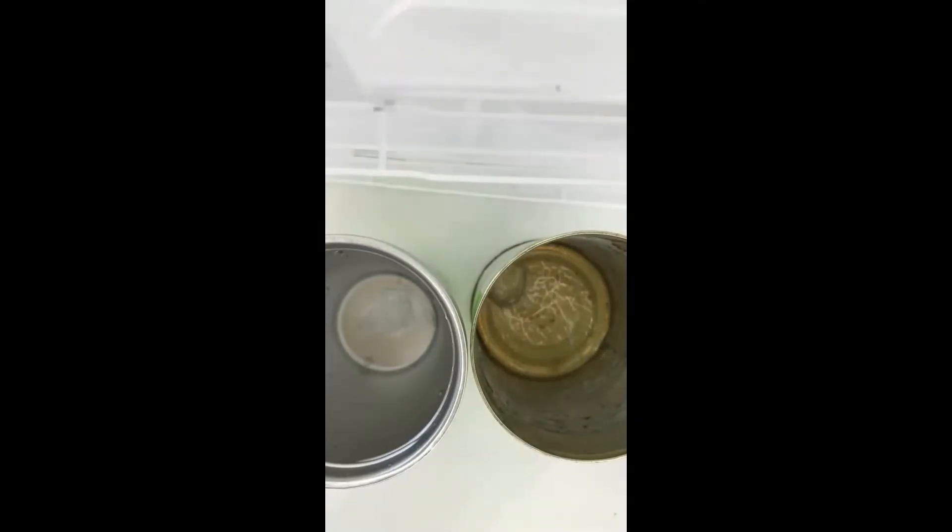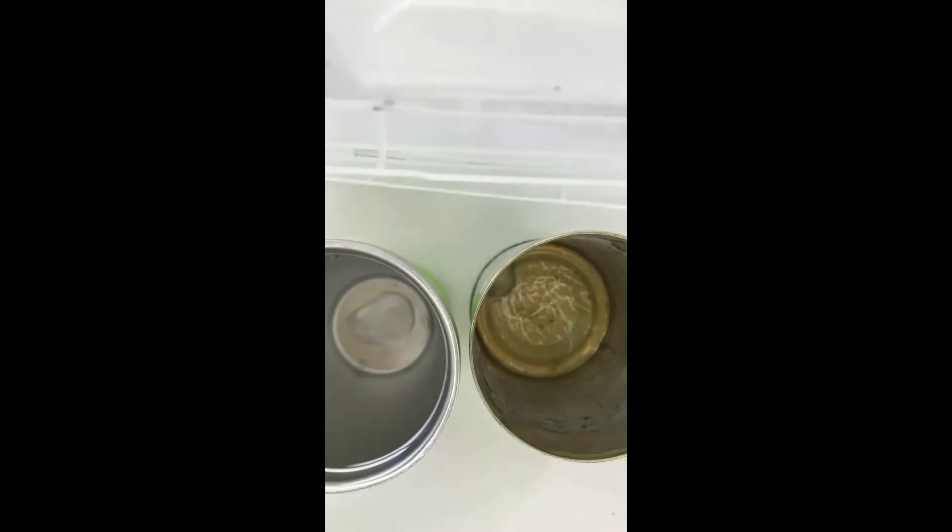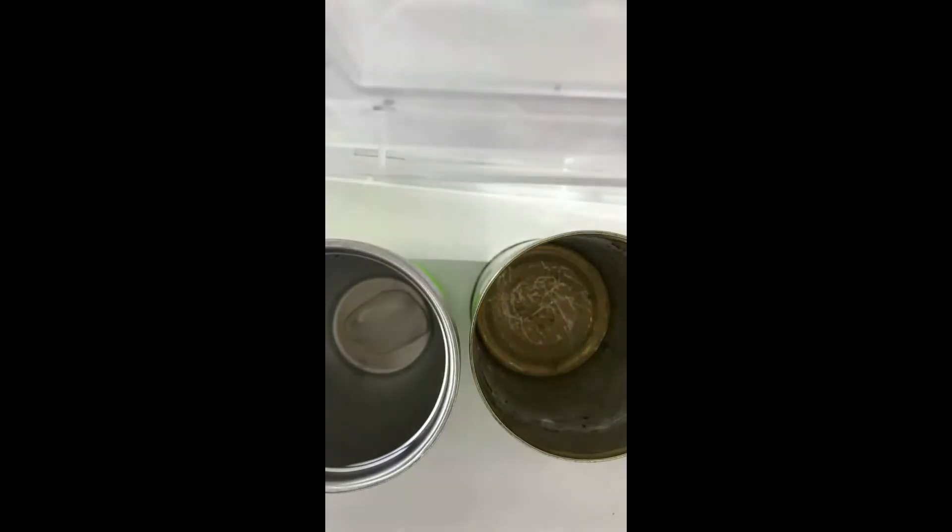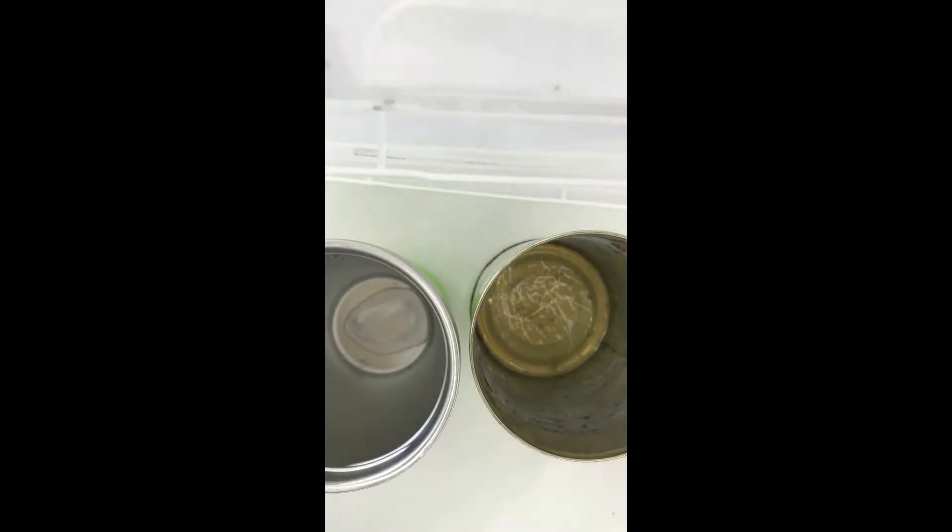The variables that could affect the time are the amount of heat energy, the size of the ice cube, and the surface it is melting on. For example, if one ice cube was placed in a polystyrene cup and one was placed in a metal saucer, which one would melt first?